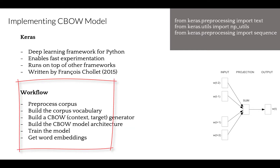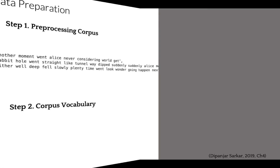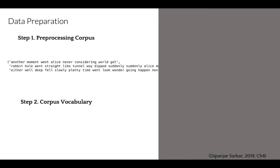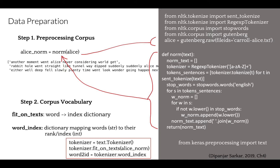The typical workflow involves several steps: pre-process the corpus, build a corpus vocabulary, build a context-target generator, build a Continuous Bag of Words model architecture, train the model, and get word embeddings to use as weights instead of, for example, TF-IDF. The first step, pre-processing the corpus, depends on the use case and typically involves removing stop words, punctuation, and converting to lowercase. Next, we build the corpus vocabulary by extracting each unique word and mapping a unique numeric identifier to each word.